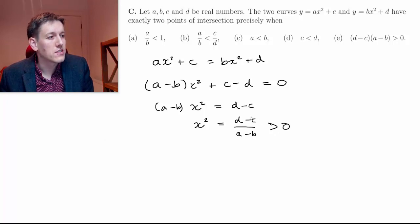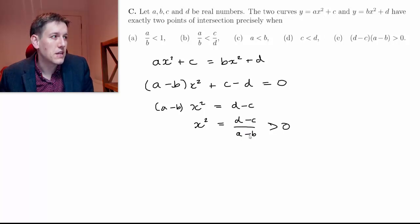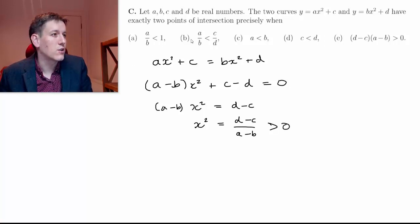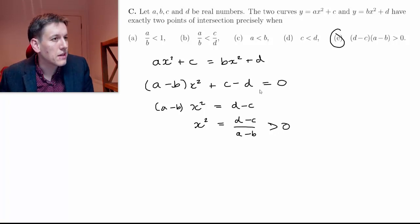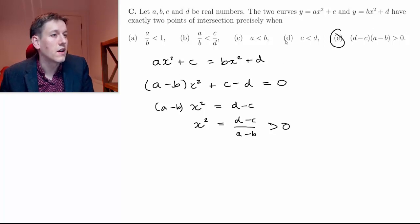Thinking about the signs at the top and the bottom, that means either d minus c and a minus b are both positive, or they're both negative. Looking at the answer conditions, option E tells us exactly this: if both are bigger than zero, or both negative, this quotient will be positive. So this condition exactly matches what we're looking for, and that must be the answer.